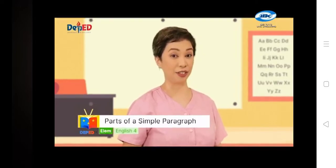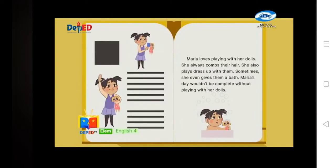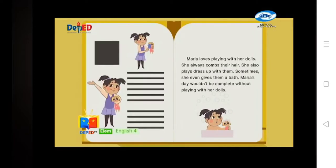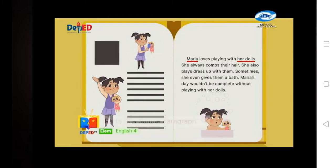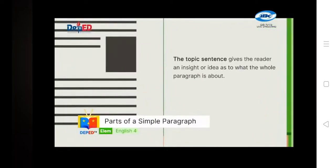Let us take a look at this example of a paragraph. Kids, read with me: Maria loves playing with her dolls. She always combs their hair. She always plays dress up with them. Sometimes she even gives them a bath. Maria's day wouldn't be complete without playing with her dolls. As you can see, the first line of the paragraph is indented. Read the first sentence again: Maria loves playing with her dolls. This sentence tells us about Maria and her dolls, and this is what we call the topic sentence.